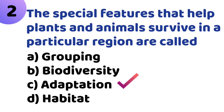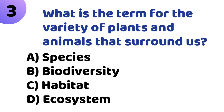Third question: What is the term for the variety of plants and animals that surround us? Option A: Species. Option B: Biodiversity. Option C: Habitat. Option D: Ecosystem. The correct answer is Option B, Biodiversity.